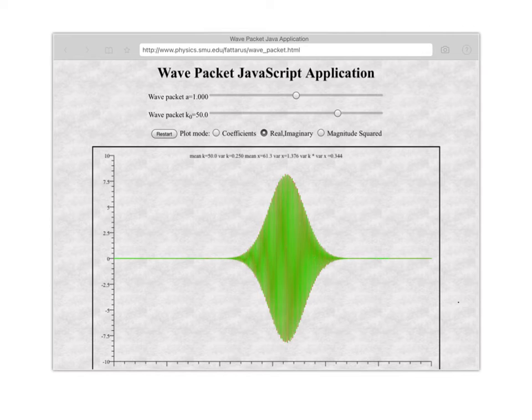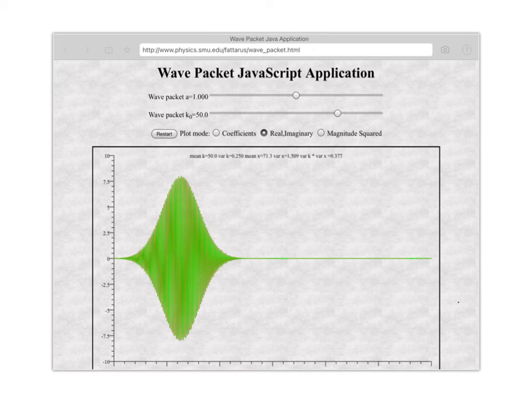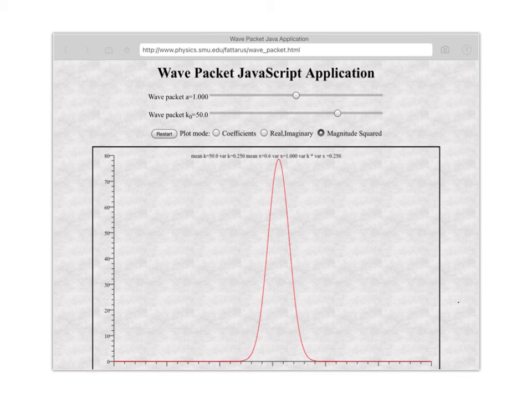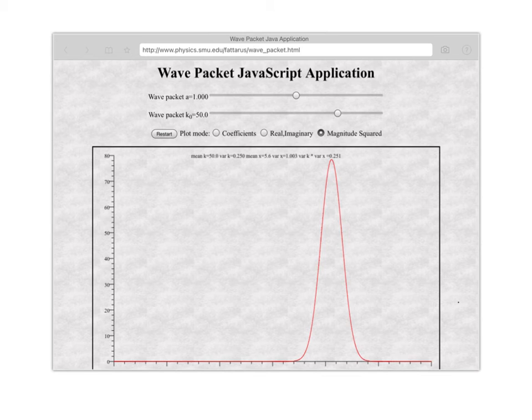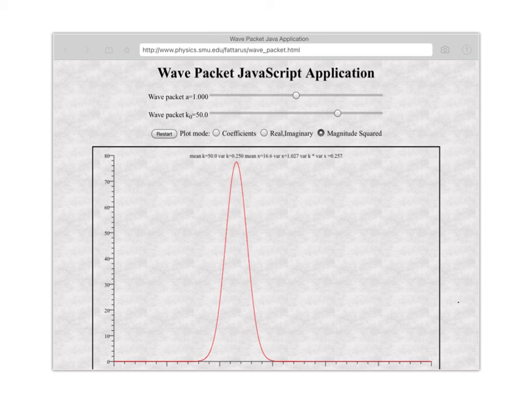And so what happens when I try to integrate this is I get the area under, well, first I have to square it, and then I get the area underneath this curve, and you can see that it no longer spreads out over the entire x-axis, and so it's going to go to zero at some point, and so I'm going to be able to get a finite area underneath this. Magnitude squared, right, you can see that this is the probability of finding the particle in a given region in space, and that is a finite area, a finite region, and so now I can normalize my wave function.